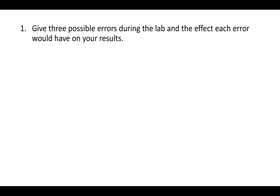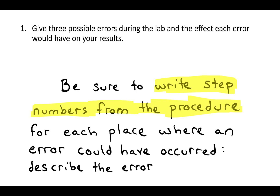Here's some help for the experiment for post lab. The first question says give three possible errors during the lab and the effect each error would have on your results. The first thing you want to do is make sure you write a step number from the procedure for the step where the error could occur.